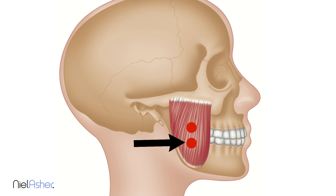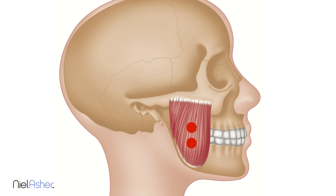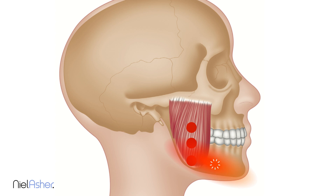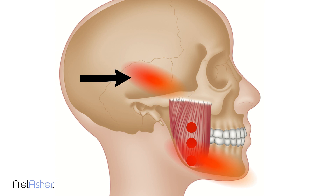The second trigger point is slightly lower, in the main part of the muscle — the part that bunches up when you clench your teeth. This will refer pain into the lower teeth and may also refer pain into the jaw. There's a third set of triggers right down where the masseter muscle actually joins onto the mandible bone.